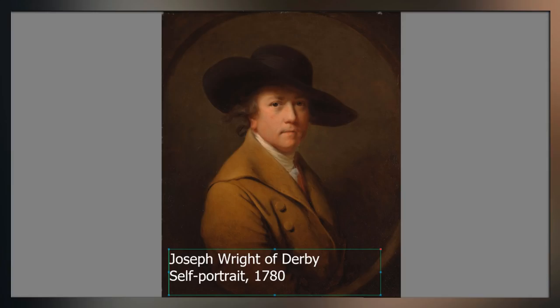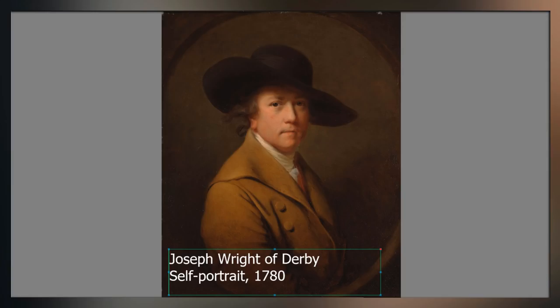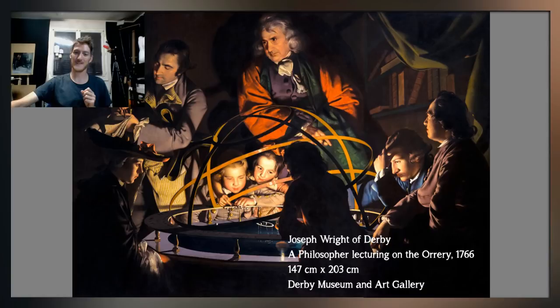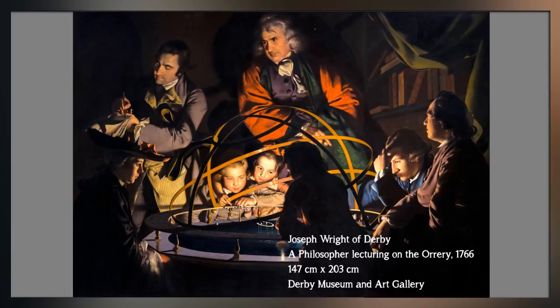Let me remove my face so that you can see the painting better. This work is by Joseph Wright of Derby. It's called 'A Philosopher Lecturing on the Orrery.' The orrery is this thing in the middle — it's a mechanical device made to replicate and model the movement of the various planets of the solar system, as you can see here.